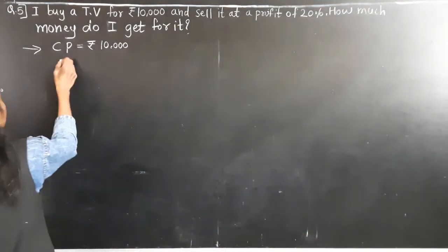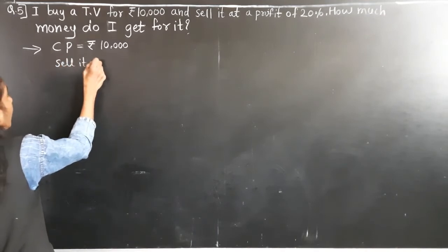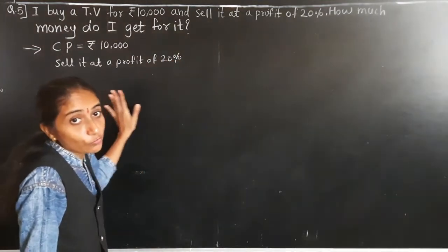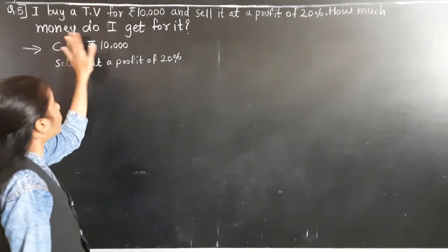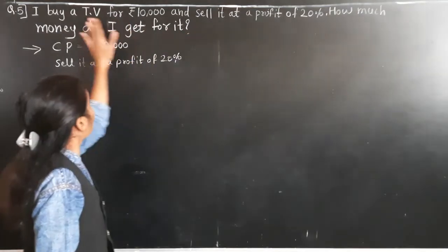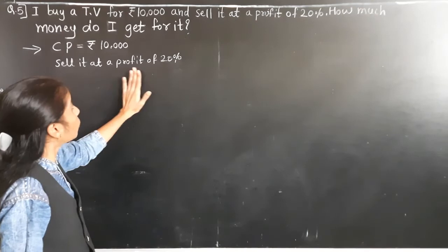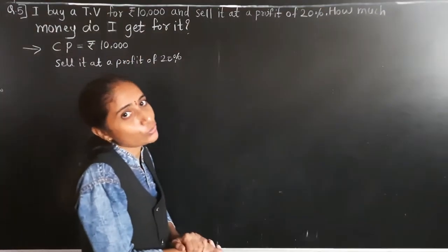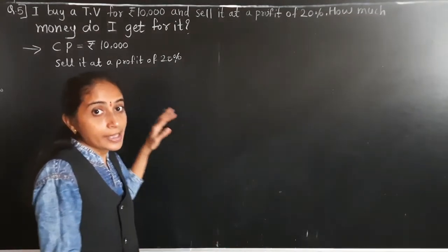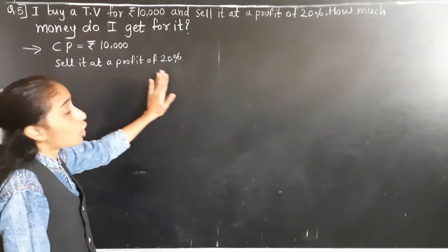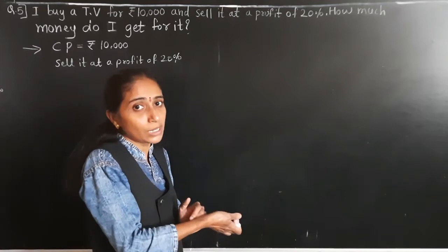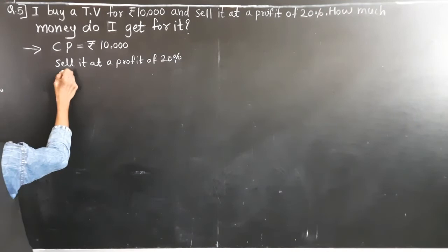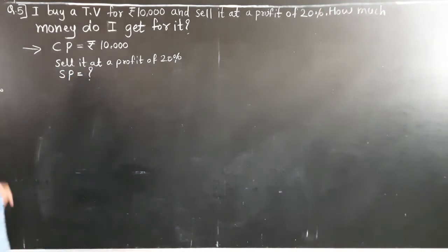So what will I write here? I sell it at a profit of 20%. How much money do I get for it? This means I need to find the selling price — at what price did I sell the TV? So here I have to find the selling price.